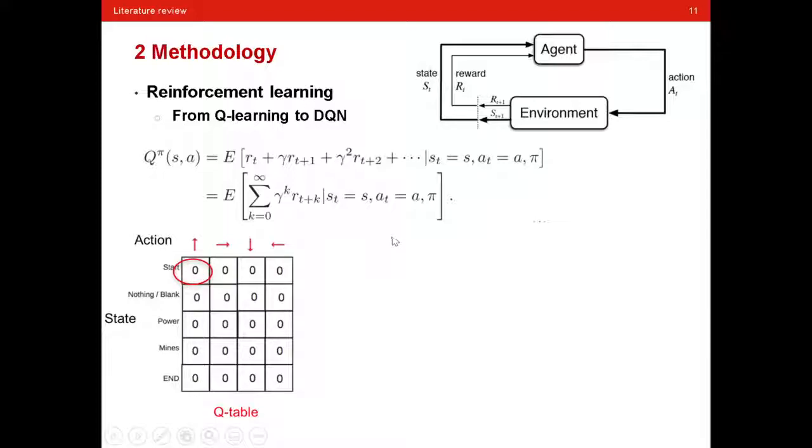What Q-learning does is to evaluate all state-action pairs value, which can be presented by a Q-table here. After that, for each state, we can select the action with the largest Q-value to play with the environment.